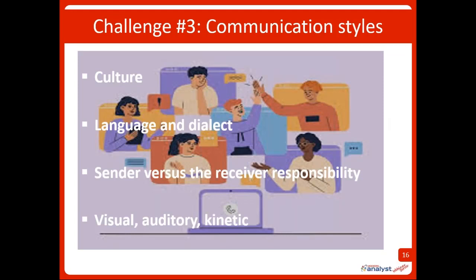Culture, language, and dialect will affect communication. In New England and Texas, people in the same country speaking the same language can't understand each other because of dialect. Remember the sender versus receiver distinction. A researcher named Land discovered two types of cultures: sender communication, where the sender assumes it's the receiver's responsibility to understand; and receiver communication, where the receiver assumes it's the sender's responsibility.